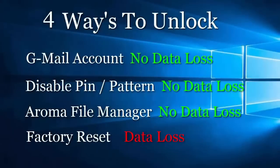Here I will show you 4 ways to unlock. The first one is a very secure and easy way to unlock your phone without losing data — we can unlock our Android phone through our Gmail account. The second one is downloading a password disable zip file to your phone's external SD card through PC or card reader. The third one is downloading Aroma File Manager to the SD card. The fourth one is easy and quick but we lose our phone's data after factory reset.